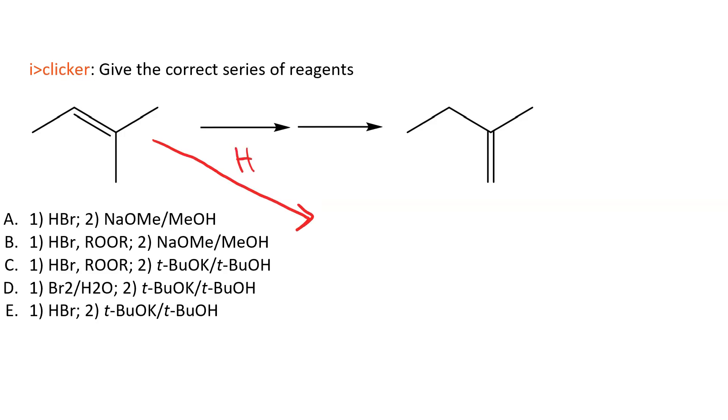First, we're going to do Markovnikov hydrohalogenation. HBr, HI, or HCl would work.